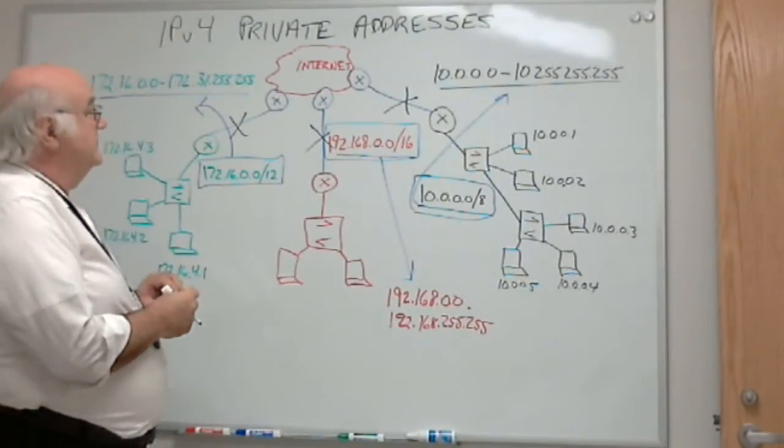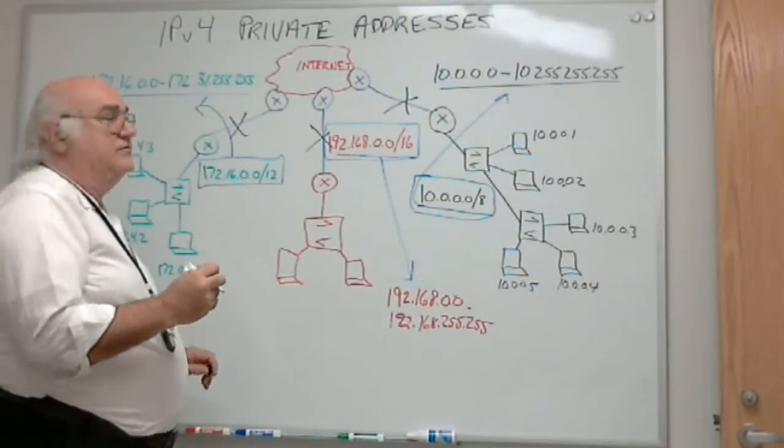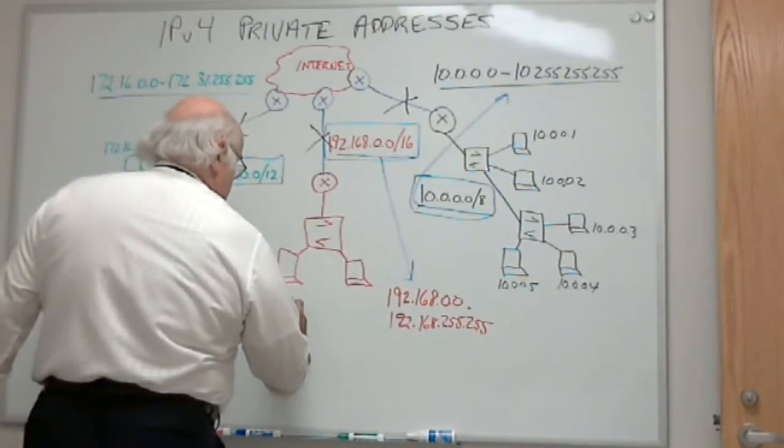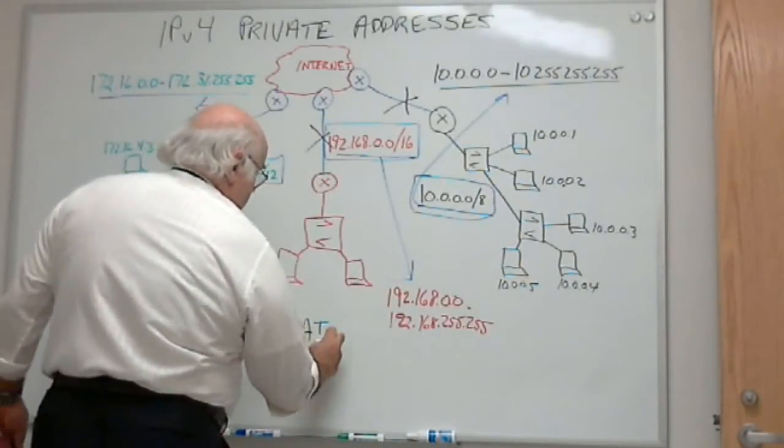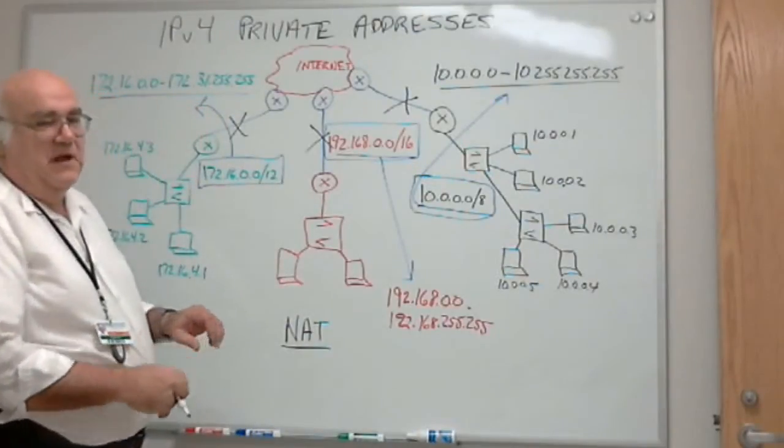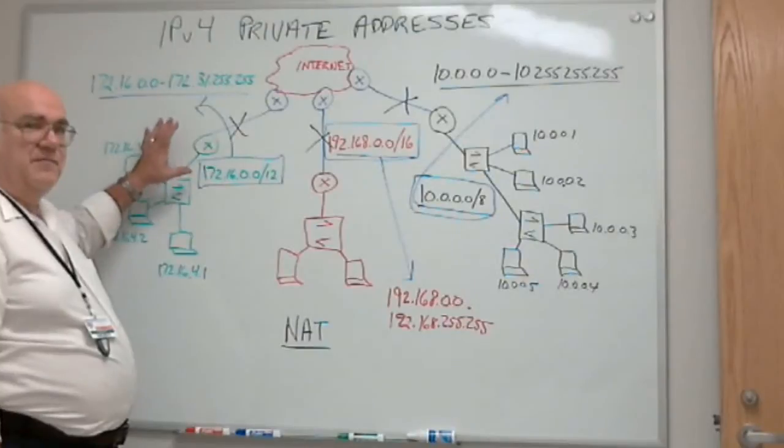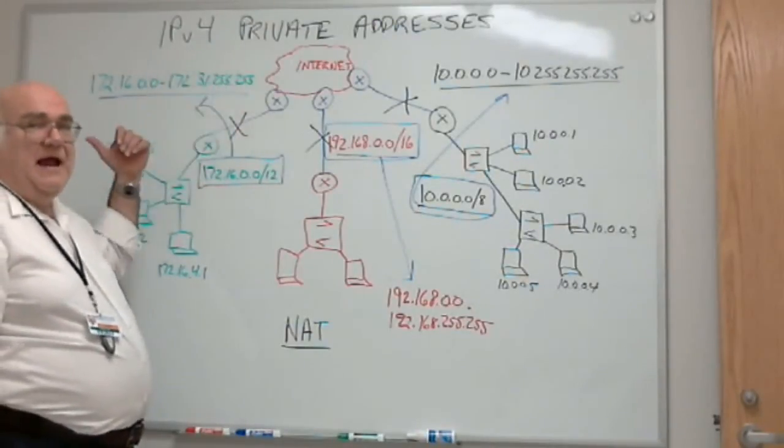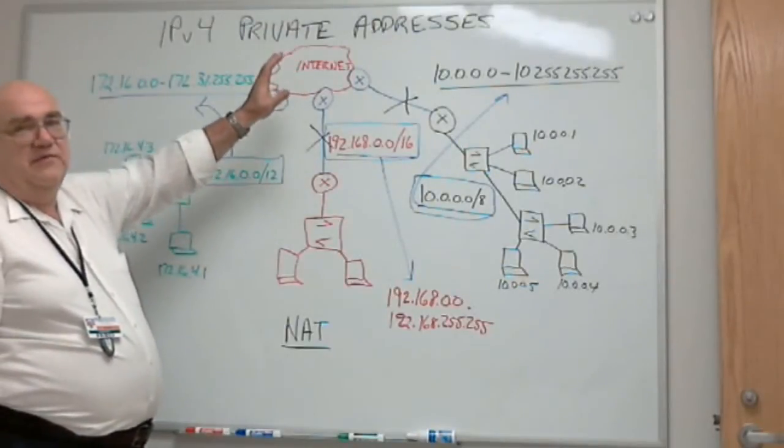So what can we do? Well, there is a service that my router can provide for me called Network Address Translation. I can use NAT. And we're going to see NAT in a later course. But Network Address Translation allows my router to take a private address from a user, change it to a public address that I have, and use the public address in communicating with the Internet.